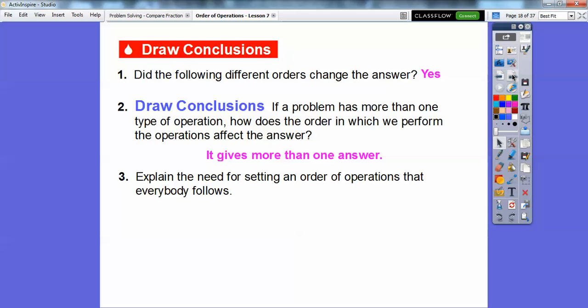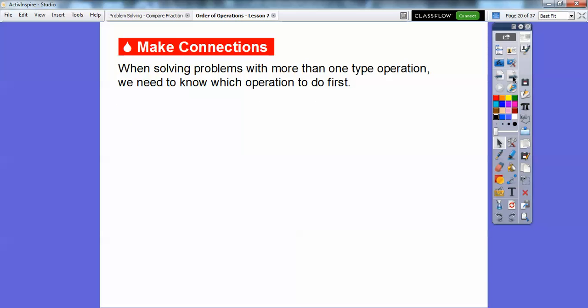Let's draw some conclusions. If a problem has more than one type of operation, how does the order in which we perform the operations affect the answer? Well, we kind of talked about that. It gives more than one answer. So we need to have some sort of order. Explain the need for setting an order of operations that everybody follows. Well, so we can all have the same answer. If there's one order, then everybody will come to the same answer, hopefully, as long as we follow the same order.